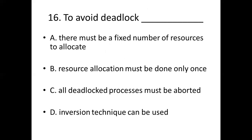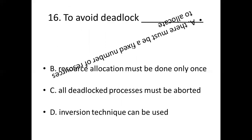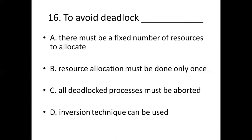Sixteenth bit. To avoid deadlock, Option A: There must be a fixed number of resources to allocate. Option B: Resource allocation must be done only once. Option C: All deadlocked processes must be aborted. Option D: Inversion technique can be used. Answer: Option A, there must be a fixed number of resources to allocate.